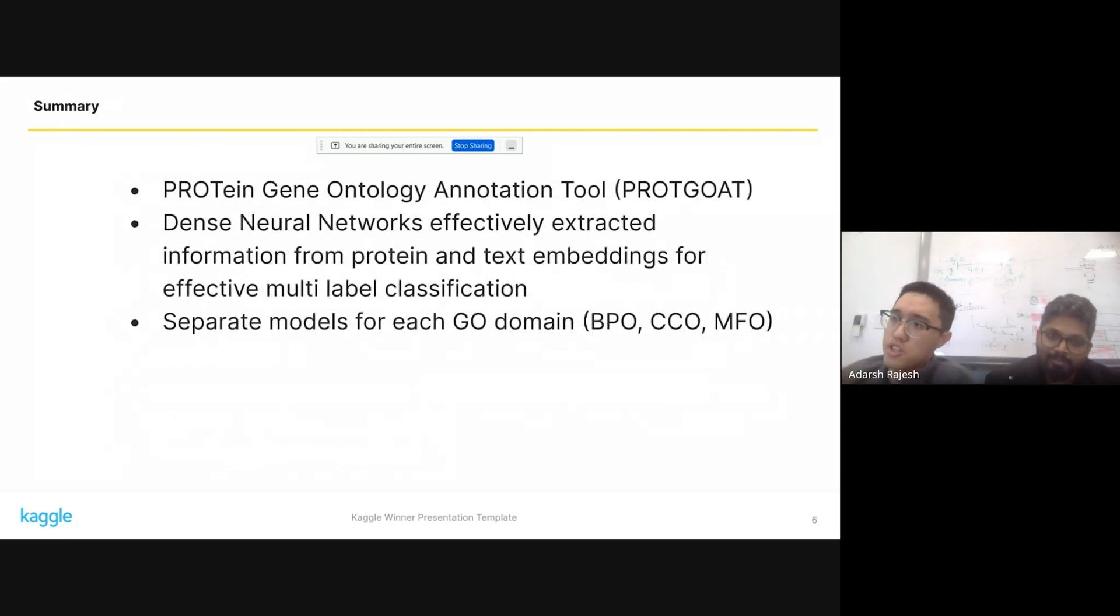The tool that we have generated, we are calling ProGoat. It's Protein Gene Ontology Annotation Tool. The core of it is essentially using very simple dense neural networks to extract information from these protein embeddings, as well as from some text data that we generated. And essentially, we have separate models for each individual GO domain, BPO, CCO, and MFO.